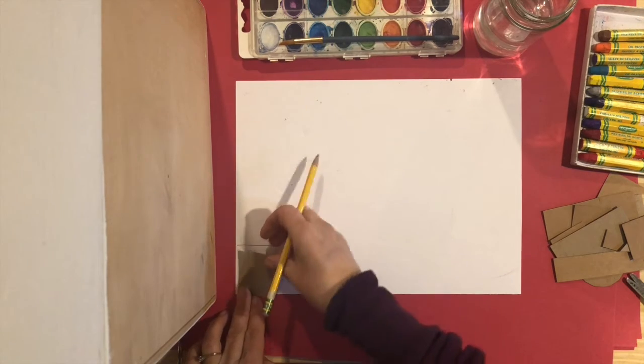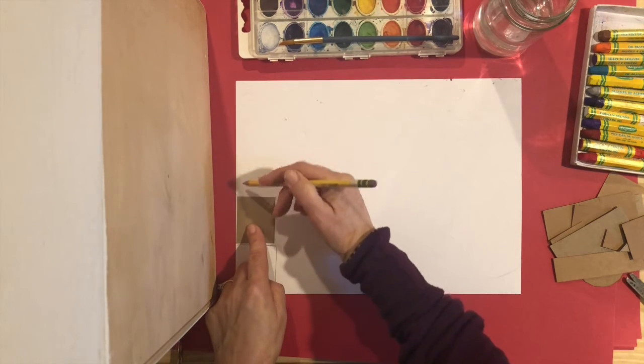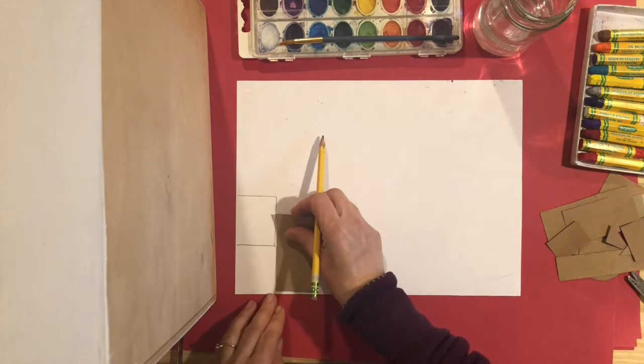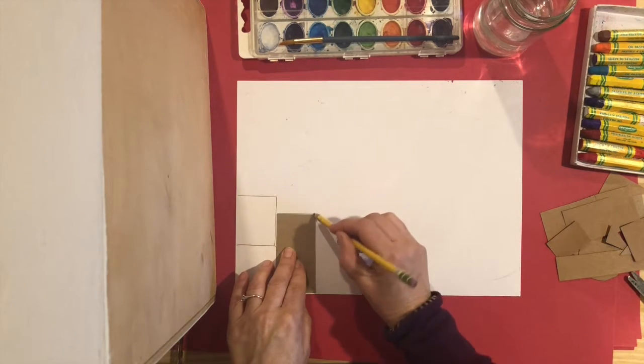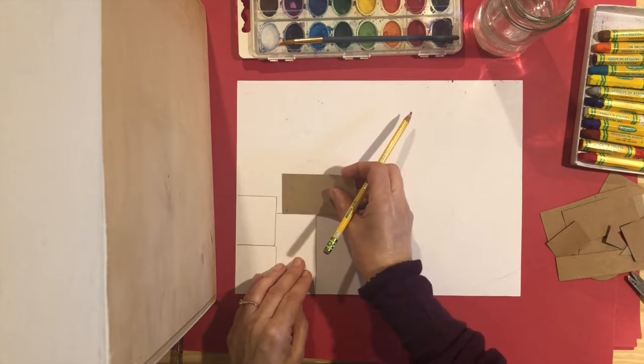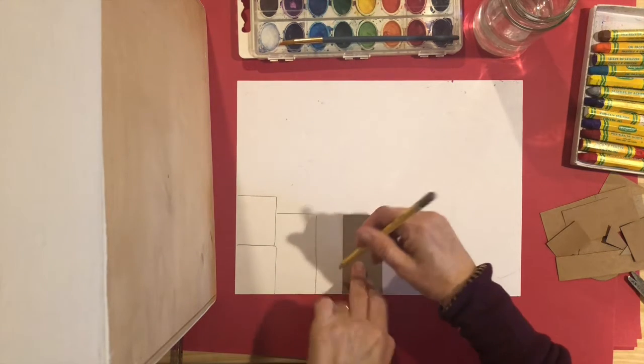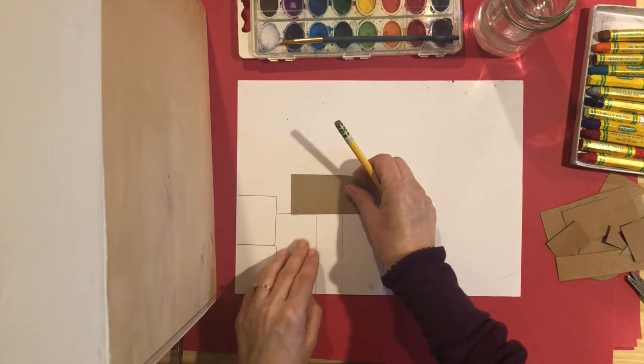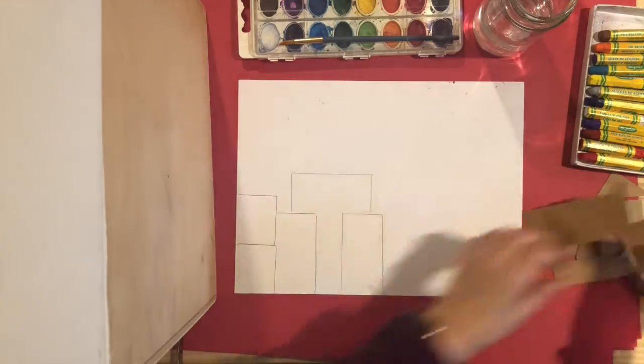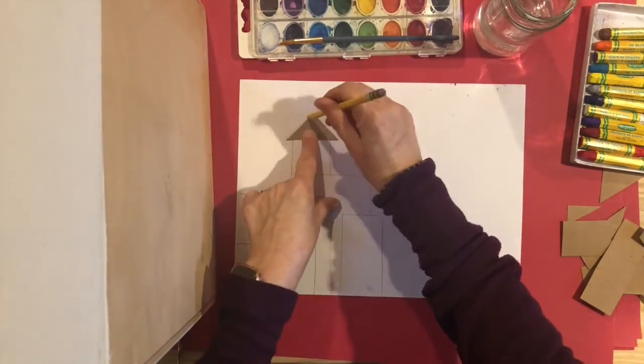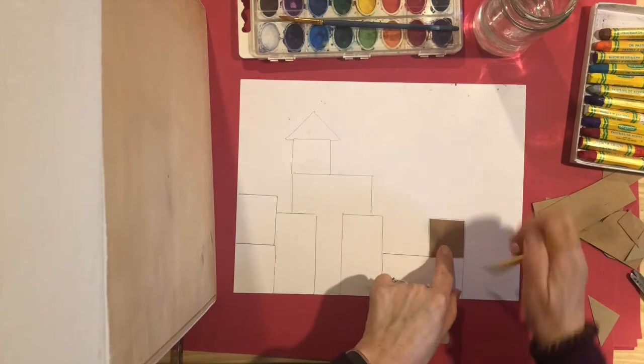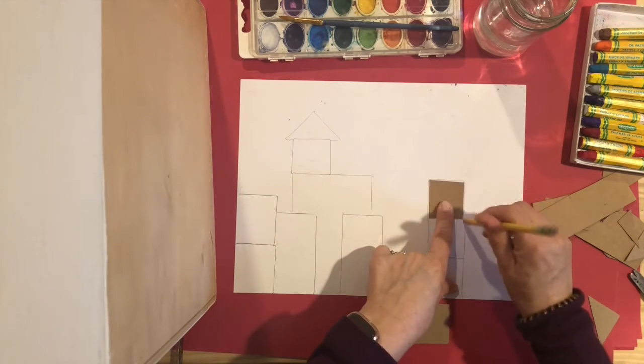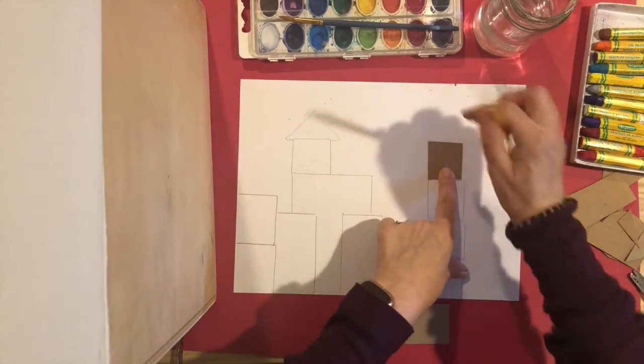...to draw around, and I'm going to build my castle up. I'm going to keep changing my blocks. Maybe I can make one go across. You can make your building go as high as you like, but do leave some space for the sky.